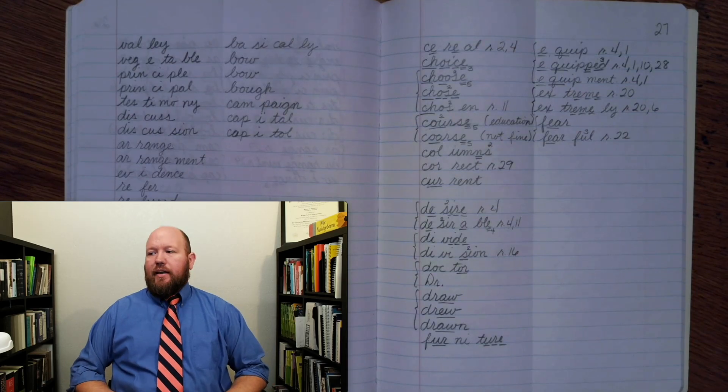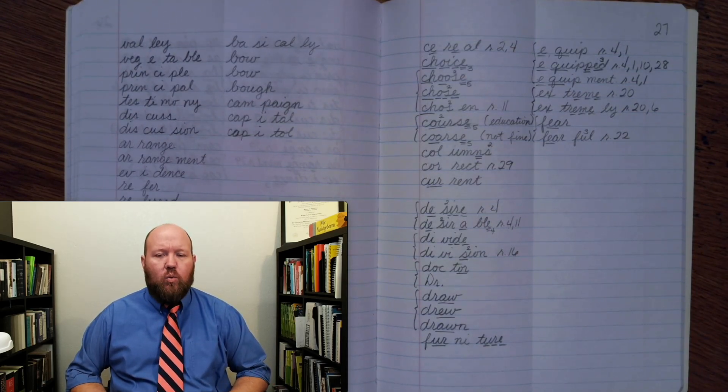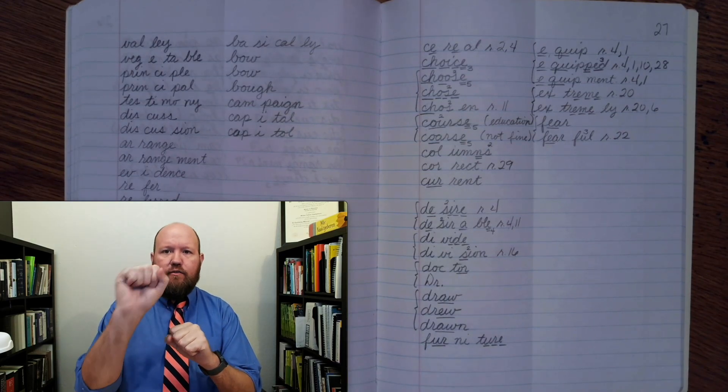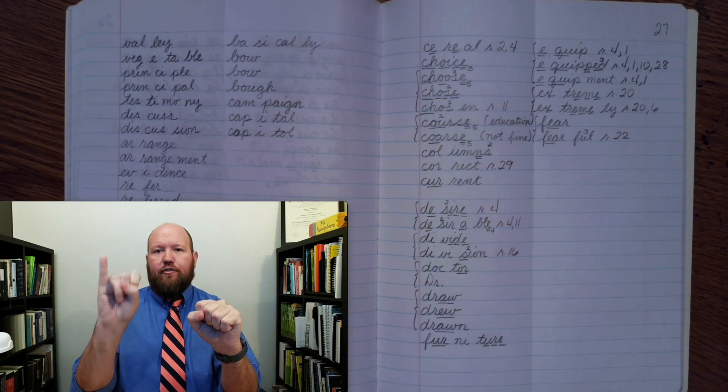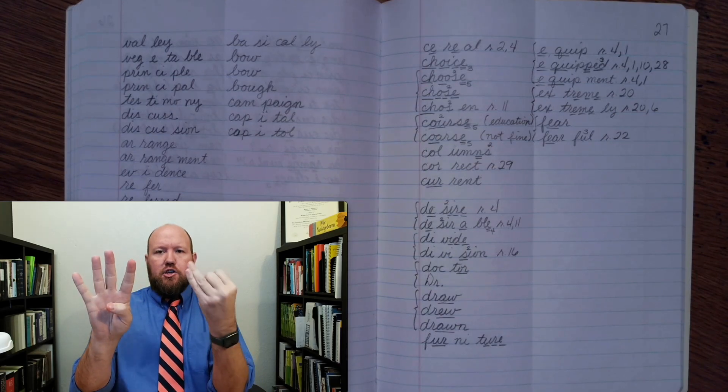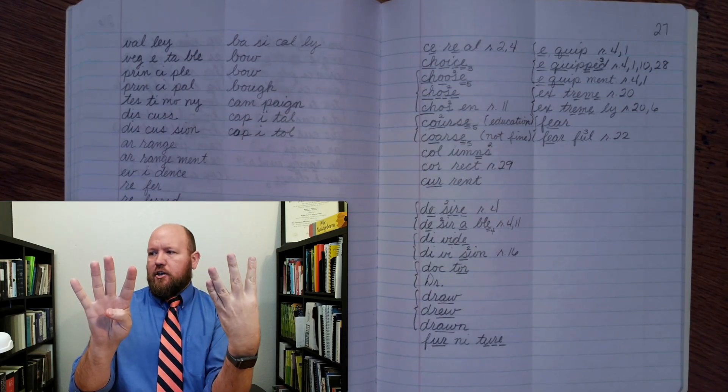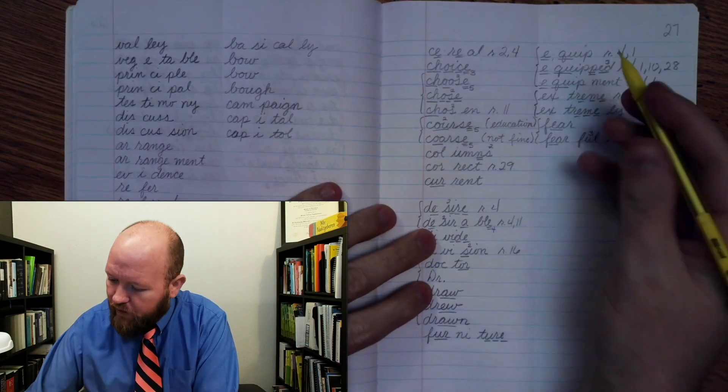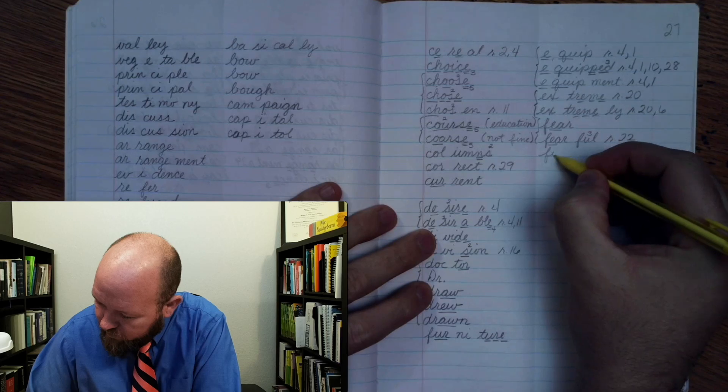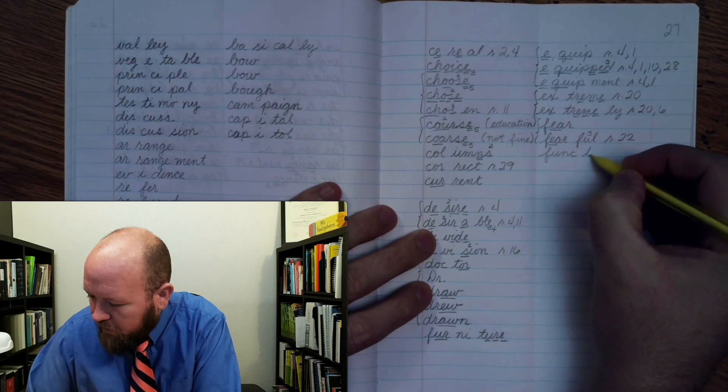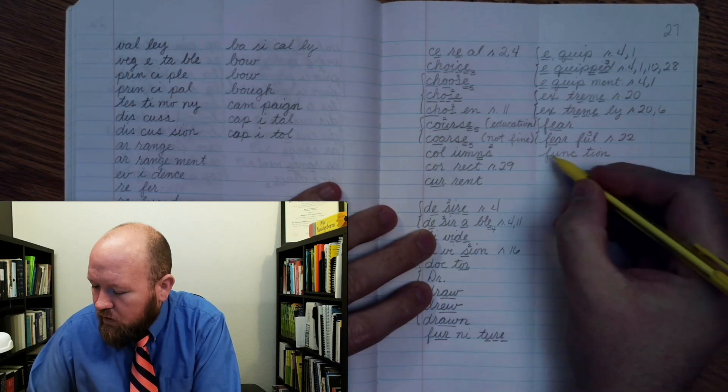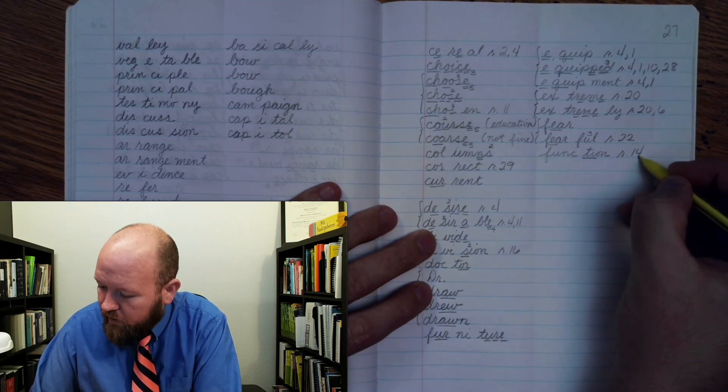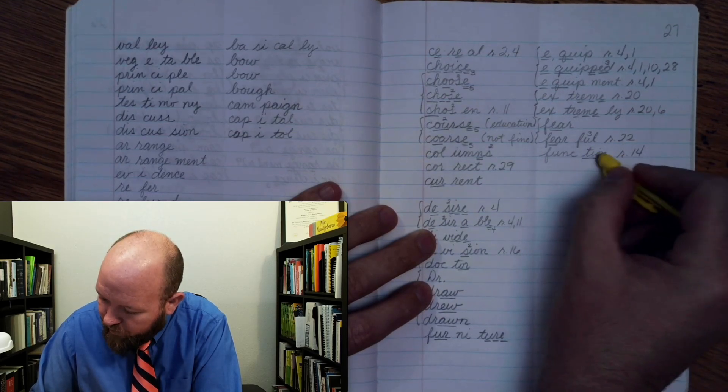The next word is function. Like what is its function? What does it do? Function, base word function. Func-tion. F U N C, T I O N. And here, this K is a C. Function. F U N C, T I O N rule 14, O N. Function.